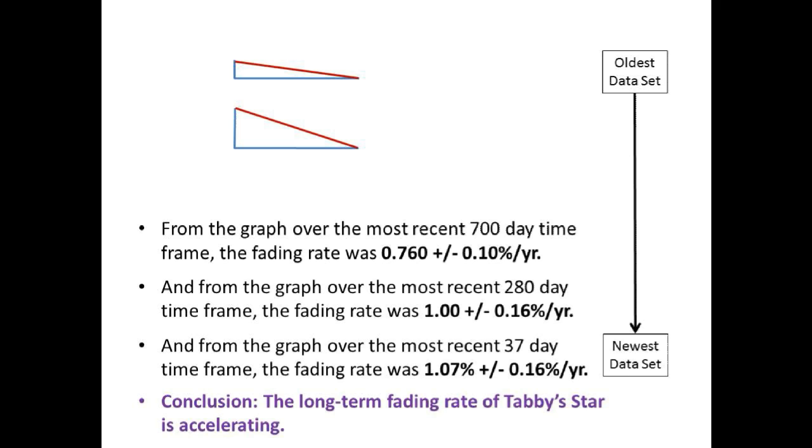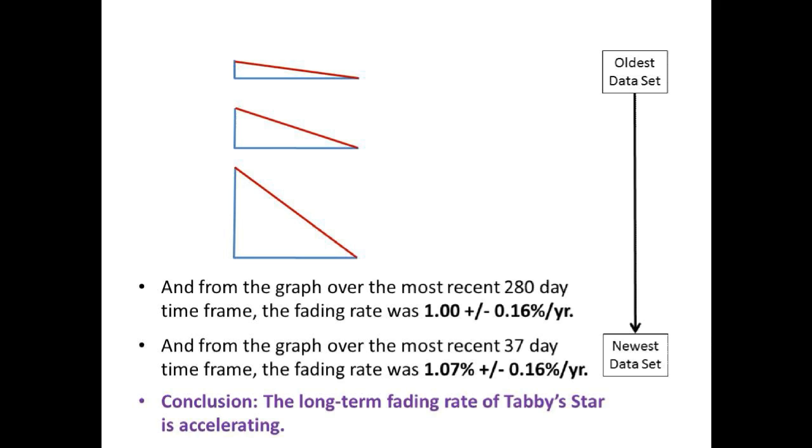The third and next most recent measurement of the long-term dimming of Tabby's Star were derived from Bruce Gary's 700-day graph and calculated to be 0.760% per year. So let's represent this third dimming rate by another red line whose slope is proportional to both the first and second slopes above. This provides us now with an accurate graphical comparison between these three measured long-term dimming rates.